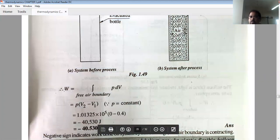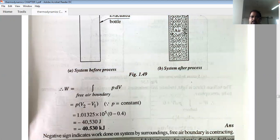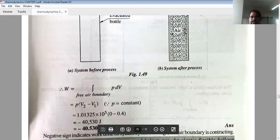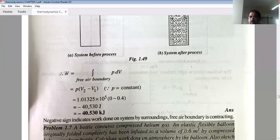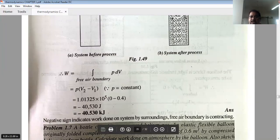That's why the work done by the bottle is 0. Now if the bottle is 0 then the total work done is equal to P into dV. Now I have told you that the final volume is 0.4 and the initial volume is 0. So P1 value is 1.01325 and V1 value is 0.4, and the answer is equal to minus 40.530 kilojoules. Now remember that negative sign work done means work done is on the system, by the surrounding. So this statement will also be written: negative sign indicates work done on system by surrounding.